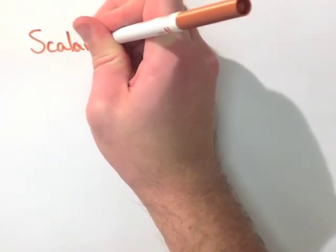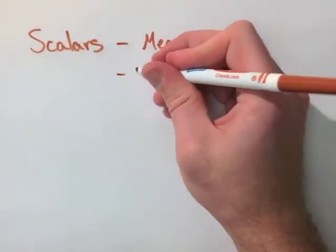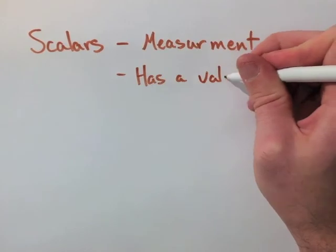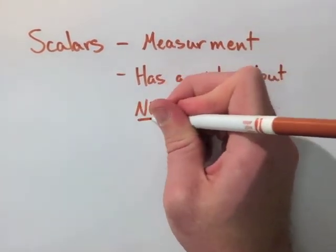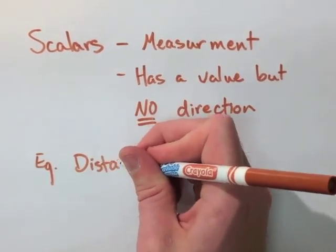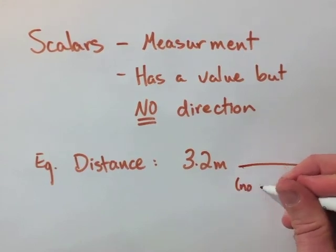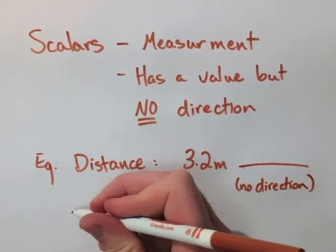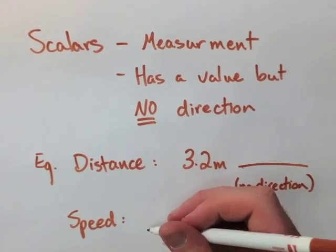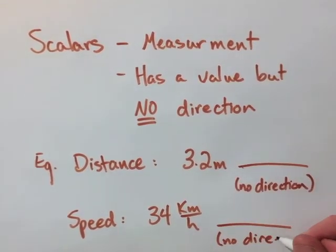In this note, we're going to start out looking at scalar quantities. A scalar is a measurement which has a value but no direction associated with it. An example of this would be distance. A distance of 3.2 meters has some value but there's no direction associated. We could also look at speed, which is like 34 kilometers an hour, again, has no direction.